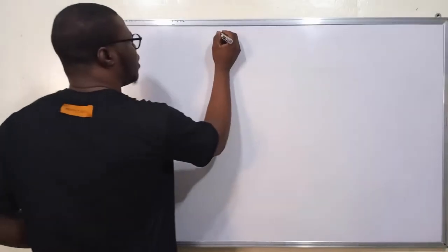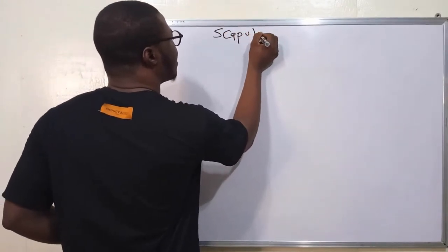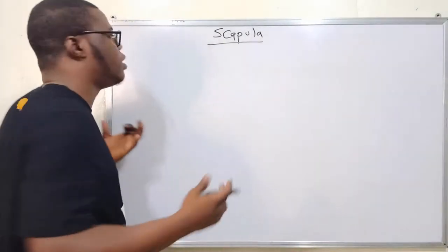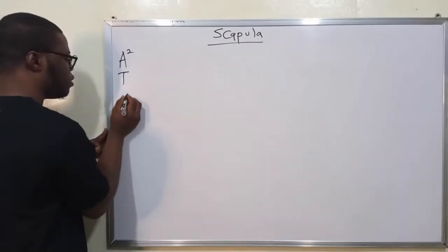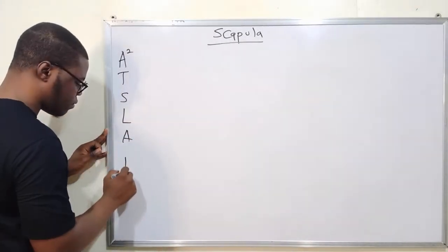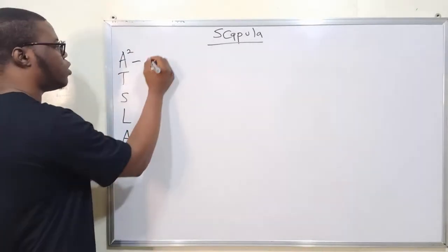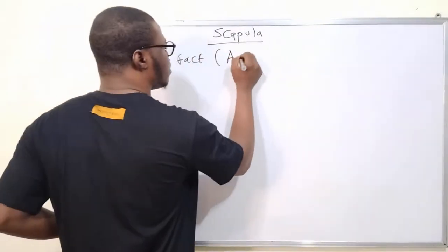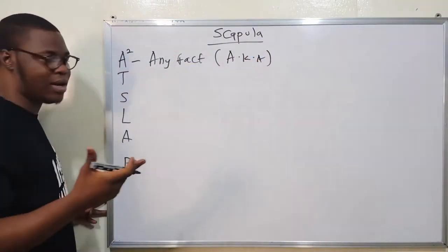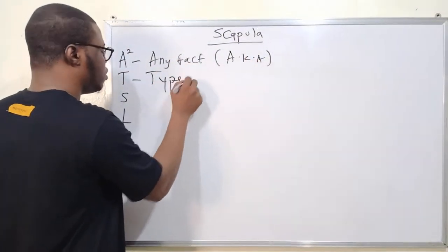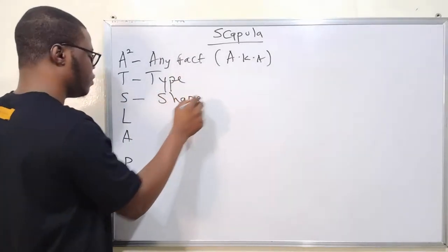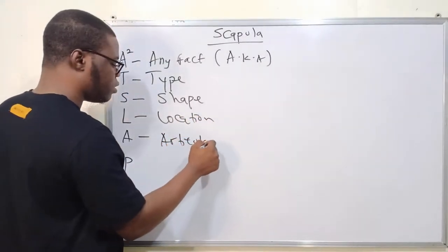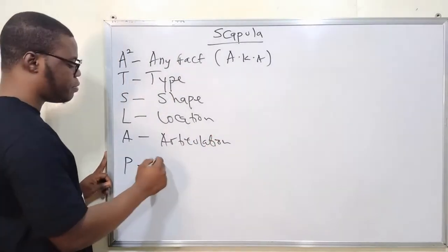Welcome back. Now talking about the scapula. To describe the scapula, we are going to use the same acronym I taught you in our previous video for describing a bone, and that is: HEART SLAP. The A is any fact about the bone, and the second A is also known as. The T is the type of bone, the S is the shape, the L is the location, the A is the articulation, and the P is the part.